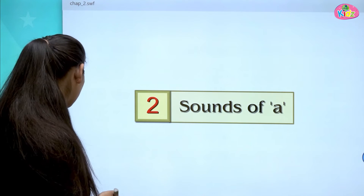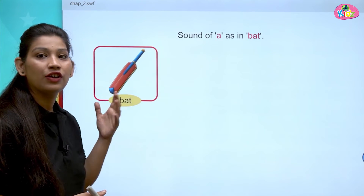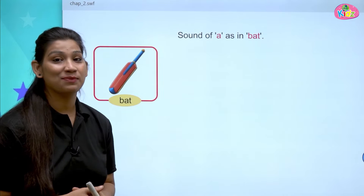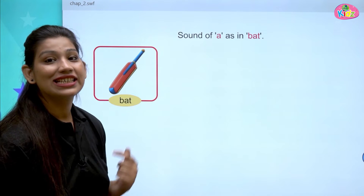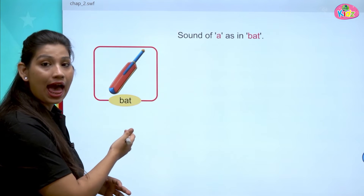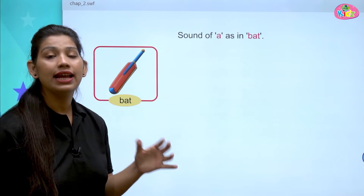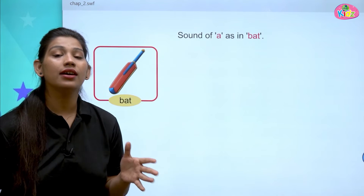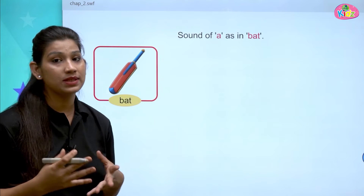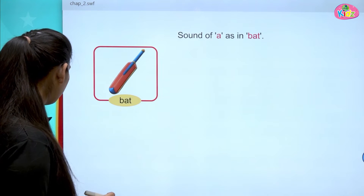Words with A sound. Mostly are three letter words. First, here you can see a picture of bat. You know how to write bat? B, A, T — Bat. B says B, A says A, T says T. B, A, T becomes Bat. We write it with the help of sound: B says B, so we will first write B, then A and then T. B, A, T becomes Bat.